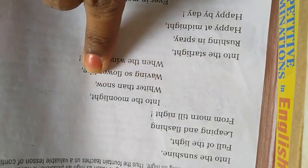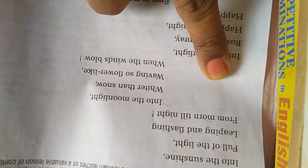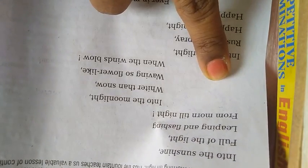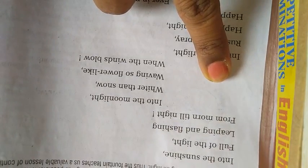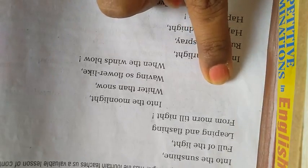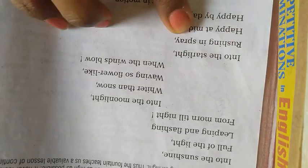In the moonlight, this fountain is more white than snow. The waves are so flower-like when the winds blow. The poet is telling through these lines that in moonlight, this fountain looks whiter than snow. And when the winds blow, the fountain waves like a flower.